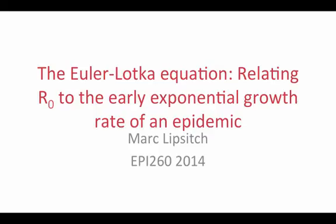In this module, we develop a more general approach which allows for a more complicated distribution of infectiousness, which we capture in the serial interval distribution. The equation we use to calculate the relationship between the exponential growth rate of an epidemic and the basic reproductive number is called the Euler-Lotka equation, after the two mathematicians who invented it. It is a famous equation in ecology, where it describes the growth of animal and plant populations, and in demography, where it describes the growth of human populations. Here we describe how to derive it in the context of infectious disease epidemiology.